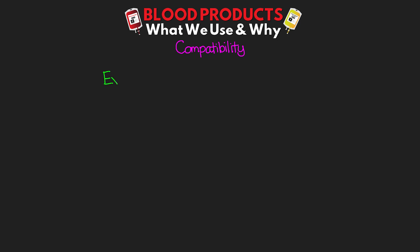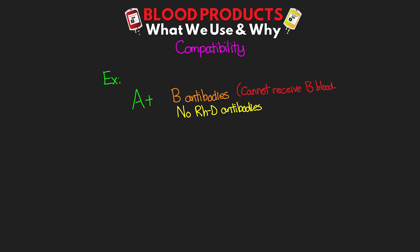We've got to talk about the compatibility here. As a result of this antigen-antibody reaction, there are interactions with different blood types that can lead to some serious consequences. In order to understand what blood type someone can receive, we have to think about what antibody they might have based on their blood type. For example, someone who's A positive is going to have antibodies for B only, and they're not going to have the RHD antibodies. Therefore, they couldn't receive any B blood, including AB donors. They would be okay with getting either A blood or O blood. And because they're RHD positive, they don't have those antibodies, so they could receive both positive and negative blood.